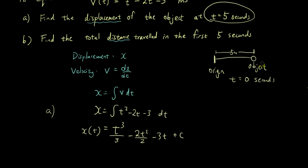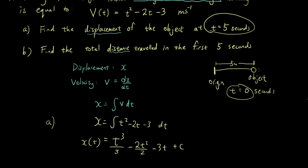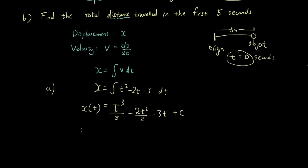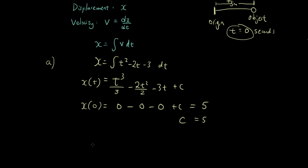We've been told that at t = 0, the object is located 5 meters to the right of the origin. Substituting t = 0: 0³/3 − 0² − 3(0) + C = 5, so C = 5. Substituting C back in, the displacement equation simplifies to x = t³/3 − t² − 3t + 5.